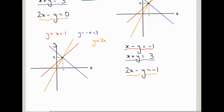What happens to this orange guy? So he was here, passing through that green point. When I have 2x minus y equals minus 1, the y-intercept becomes 1. So he moves vertically upwards like this.